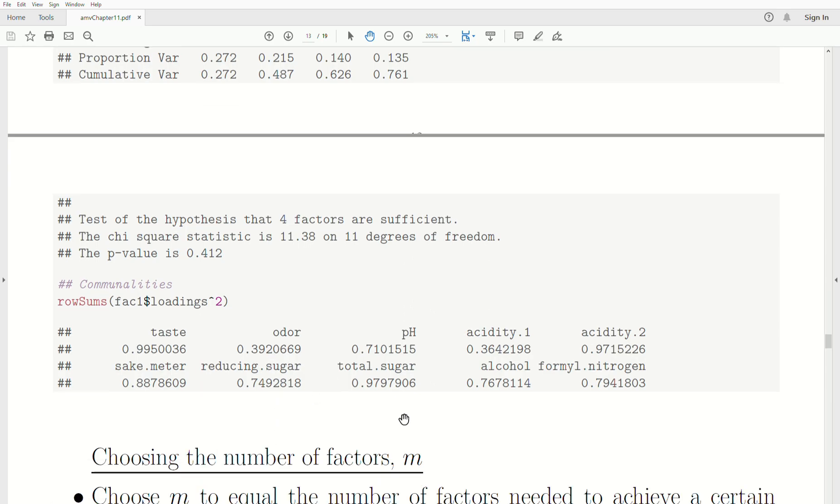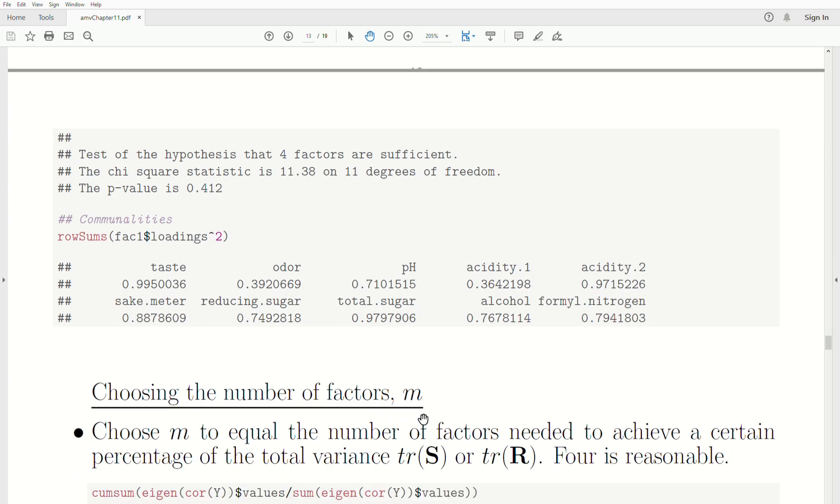One question that we have to ask is, how many factors do we use? Generically we call that M. M is the number of factors we use, and it's often undetermined going into a factor analysis. There will be four different approaches on how to find M, the number of factors you use in that model.